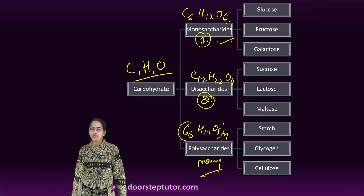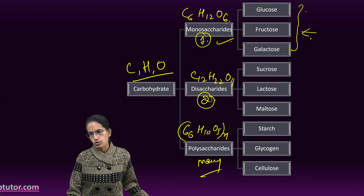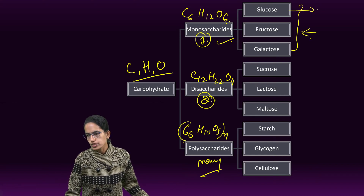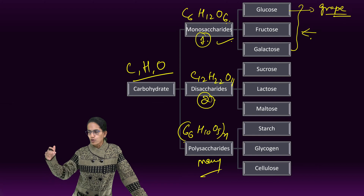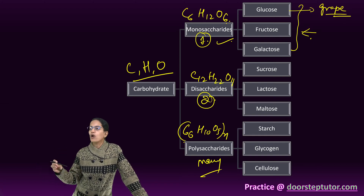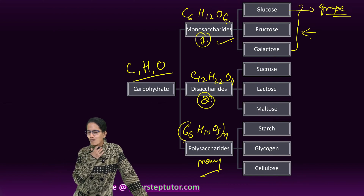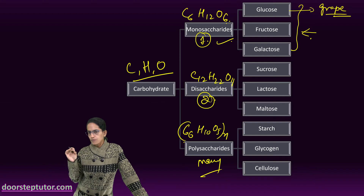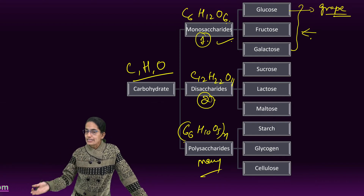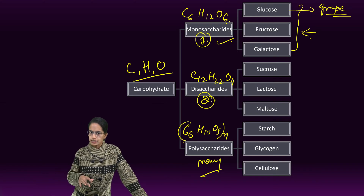Examples of monosaccharides are glucose, fructose, and galactose — the simplest form of sugar, easily absorbed by the body. Glucose is known as grape sugar and is the simplest form of sugar. It indicates the level of glucose in the blood and is called the fuel of the cell. 100 mg of glucose per 100 mg of blood is what is present in the blood. If extra, it is converted into glycogen and stored in the liver and muscles.